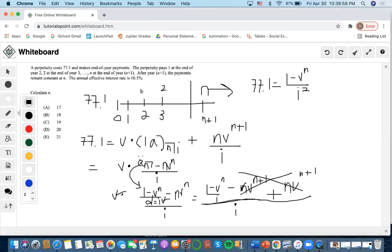The effective interest rate is 10.5%. Let's start to solve. I'll square 0.105.